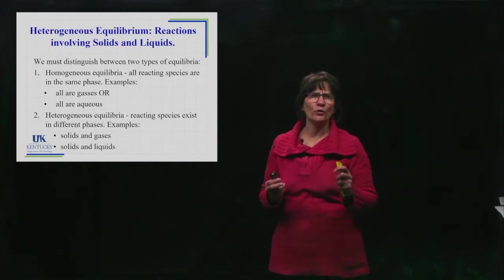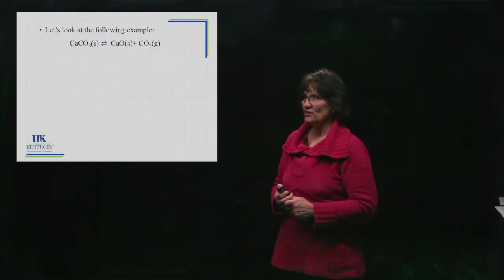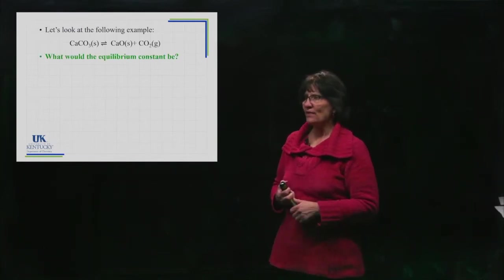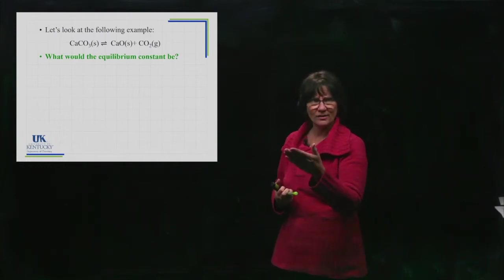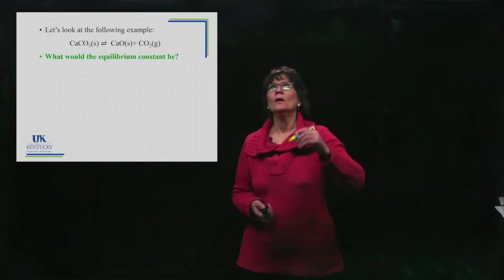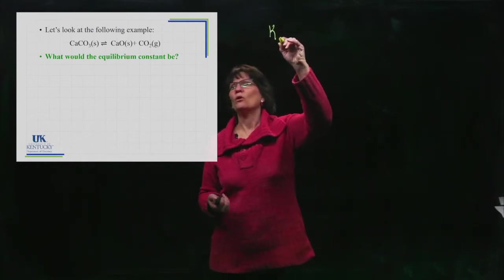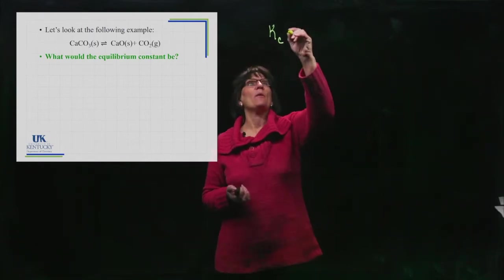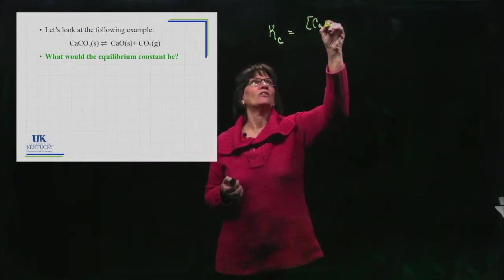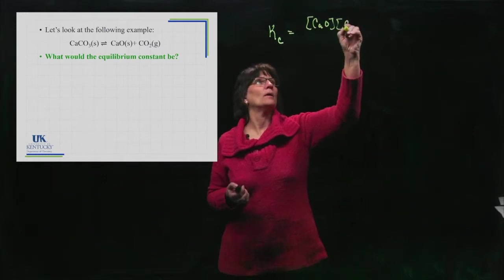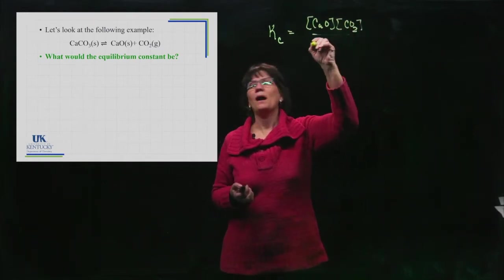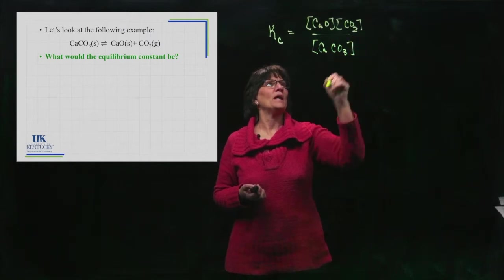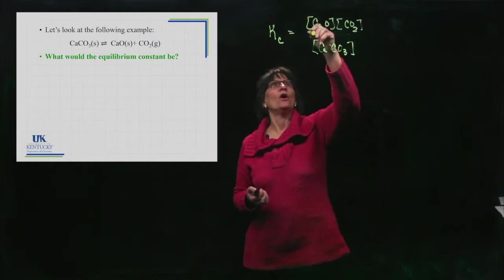First thing I'm going to do is walk you through why we do what we do. Let's consider this example. If we had this equilibrium based upon what we know so far, if we were going to write the equilibrium constant expression, go ahead and pause and write that down on your piece of paper. You should have written something like this that the Kc would be the calcium oxide times the carbon dioxide divided by the calcium carbonate.